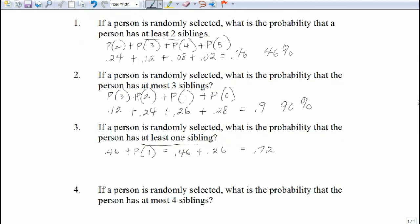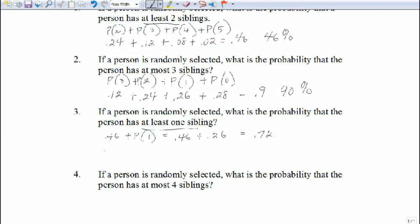So that's the understanding of a complement, is taking one minus the probability of what we don't want to give us the probability of what we do want.